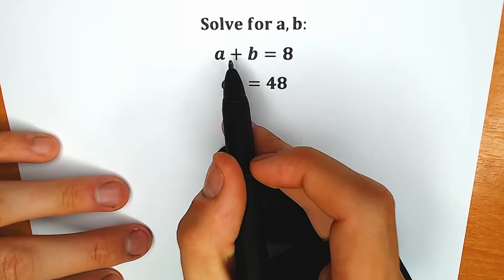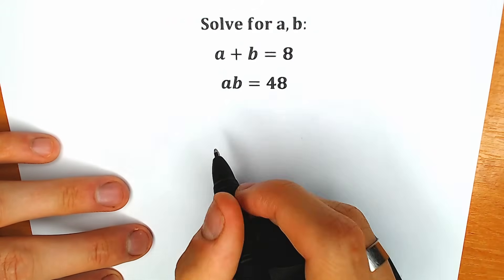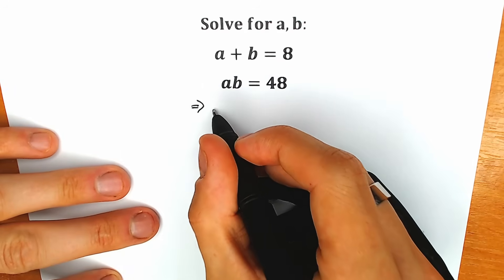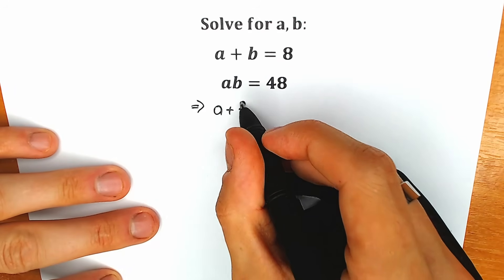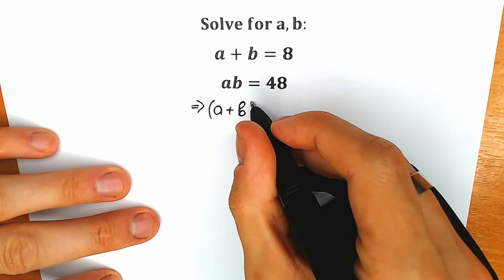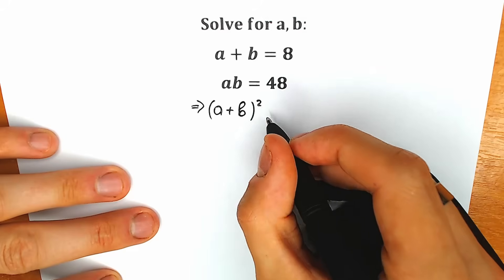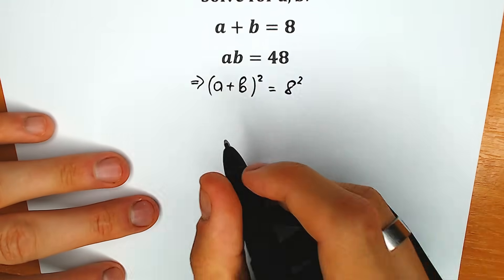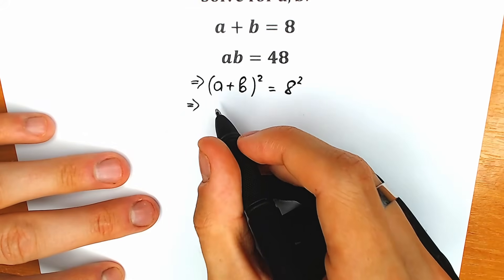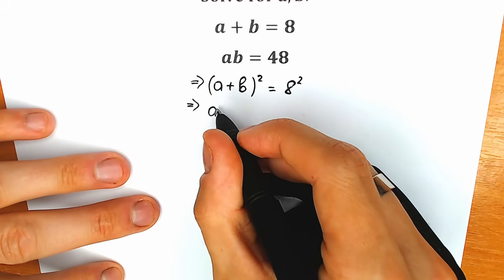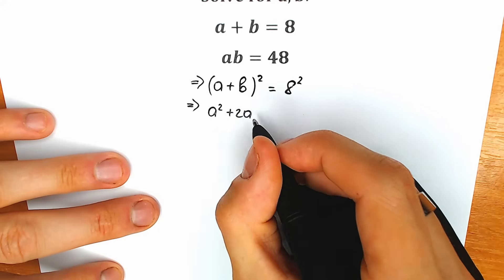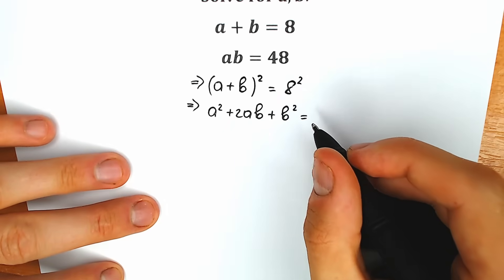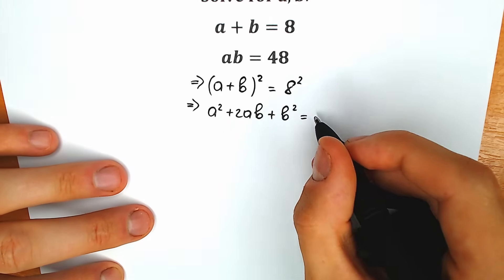First of all, a plus b equals 8. Let's raise this expression to the second power and see what happens. So we have (a plus b) raised to the second power equal to 8 squared. Let's simplify this. We have a classic school formula: a squared plus 2ab plus b squared, equal to 8 squared, equal to 64.